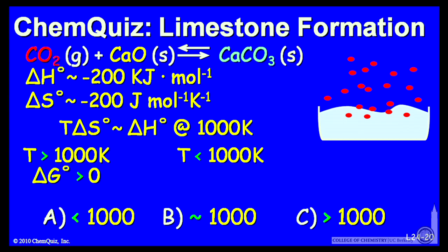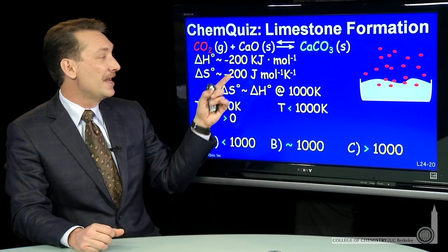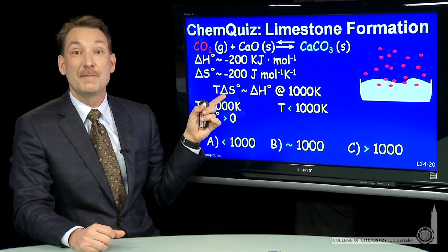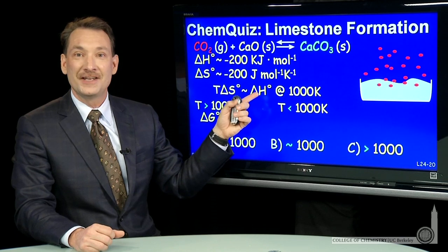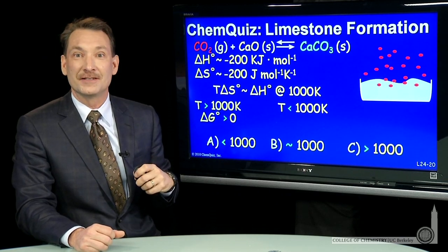Well, greater than 1,000, then delta G will be positive, because then the T delta S term will be bigger than the delta H term, and the T delta S term will be positive.